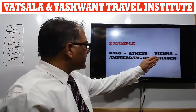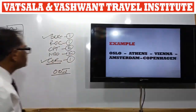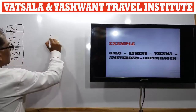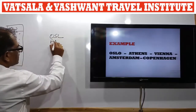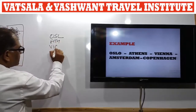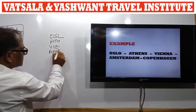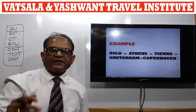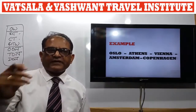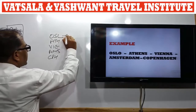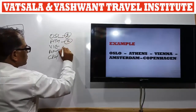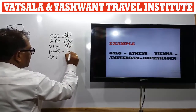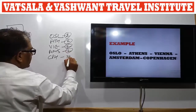Example three: Oslo, Athens, Vienna, Amsterdam, Copenhagen. First we will identify the areas. Oslo is in Norway, area 2. Athens, Greece, area 2. Vienna, Austria, area 2. Amsterdam, Netherlands, area 2. Copenhagen is in Denmark, area 2. Our whole journey is within area 2.